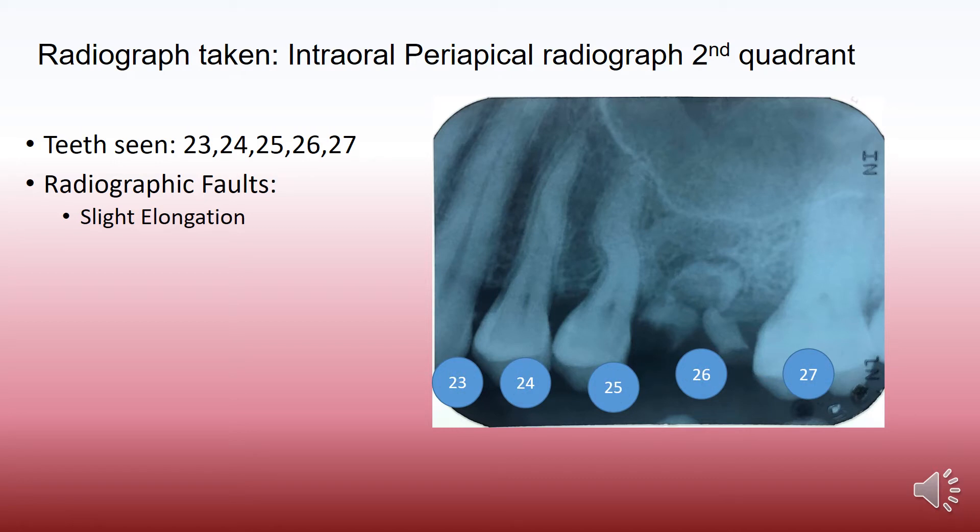The radiographic fault is a slight elongation which has happened because of a problem with the angulation. There must be less vertical angulation, because of which we are seeing slight elongation of the image, which is understood by the length of the canine root as well as the first premolar root.